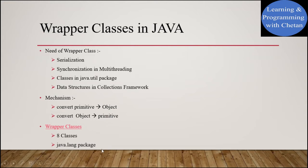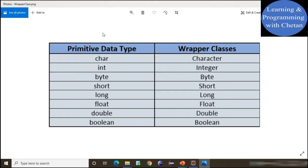Now let us discuss about the various Wrapper classes. There are a total of eight Wrapper classes in Java, which are present inside the java.lang package. Corresponding to each primitive data type we have a Wrapper class. For the char data type we have the Character Wrapper class. For numbers we have Integer, Byte, Short, and Long Wrapper classes. For decimal numbers we have Float and Double. And for Boolean values we have the Boolean Wrapper class.